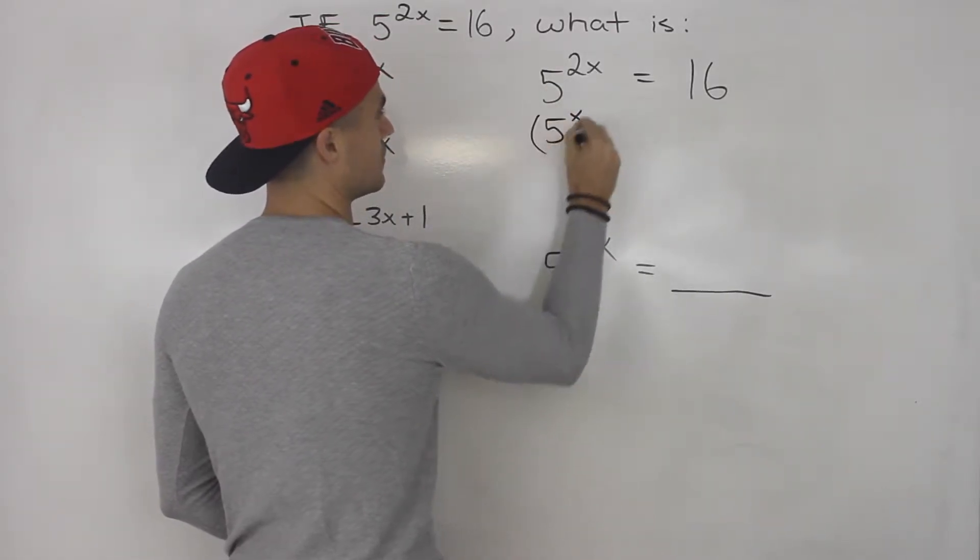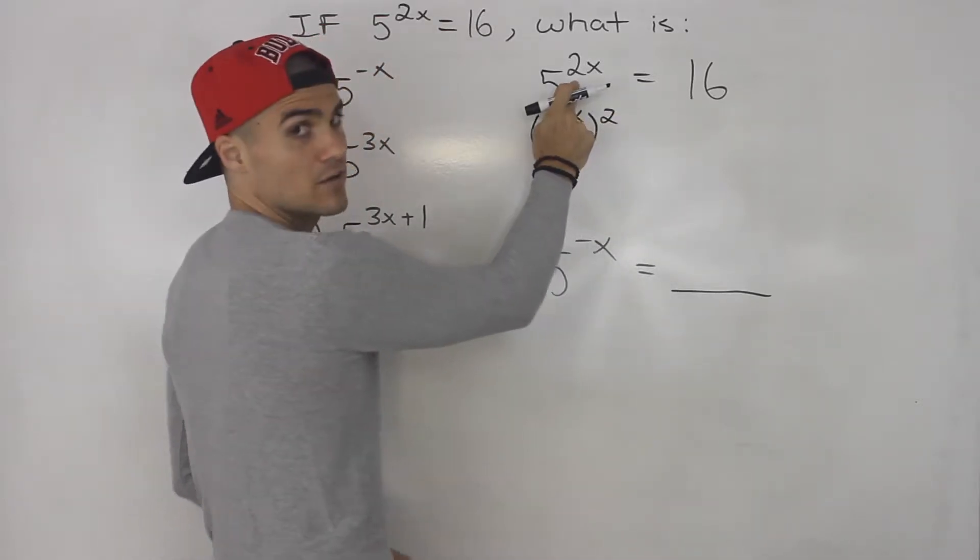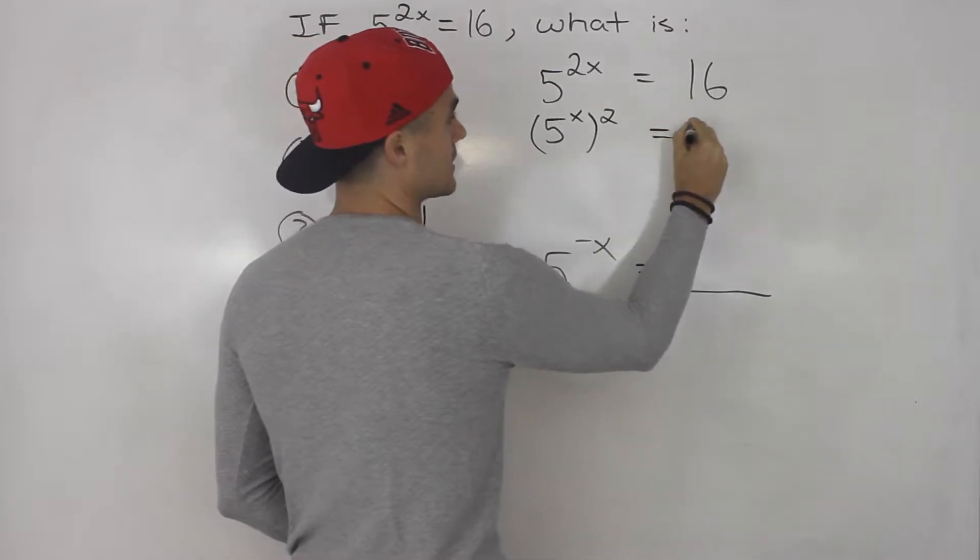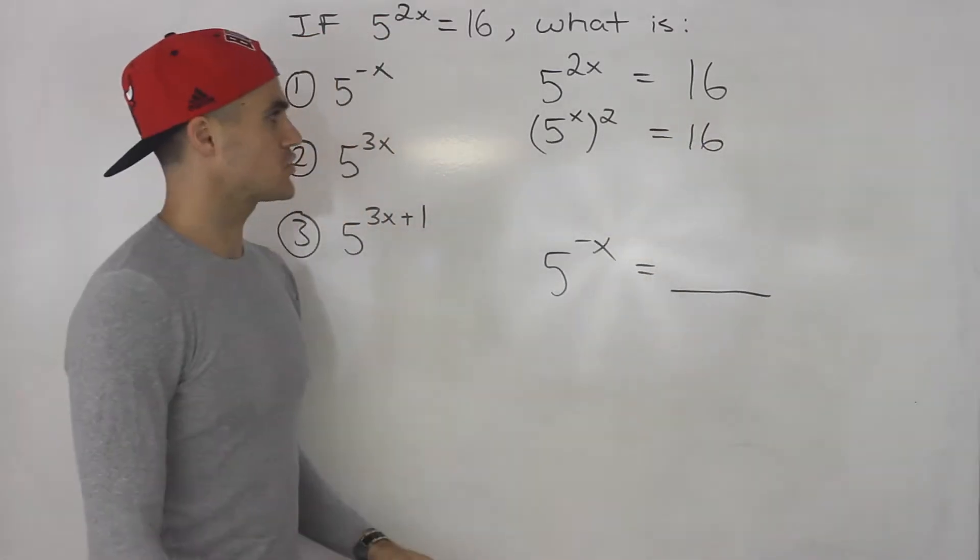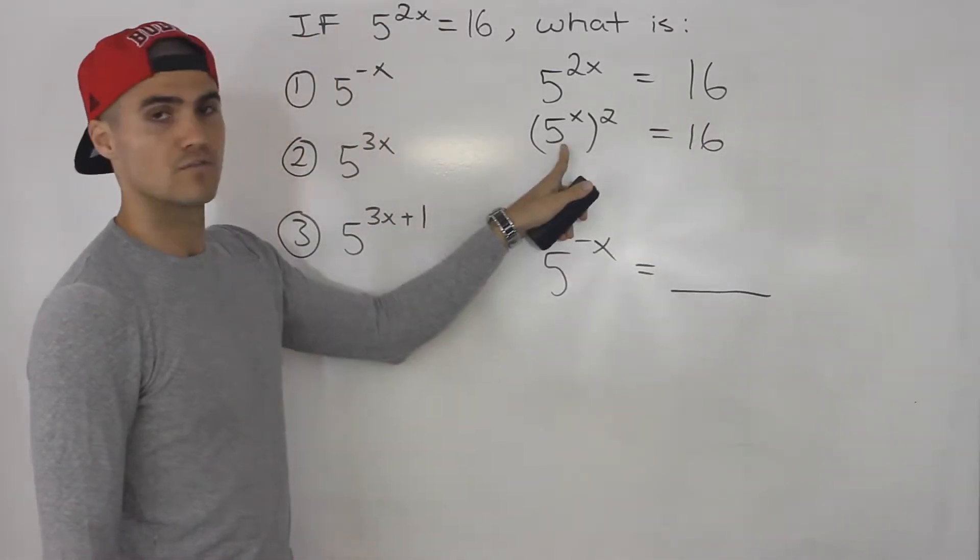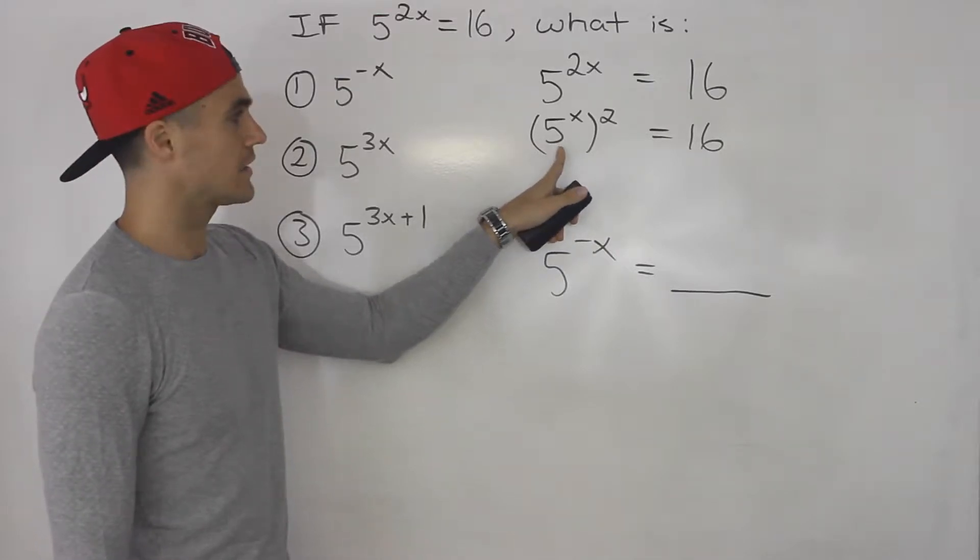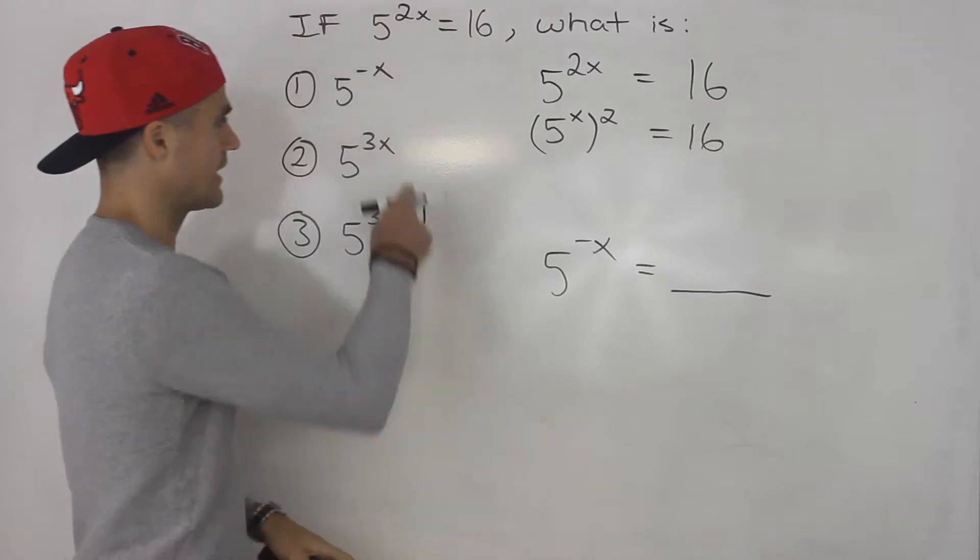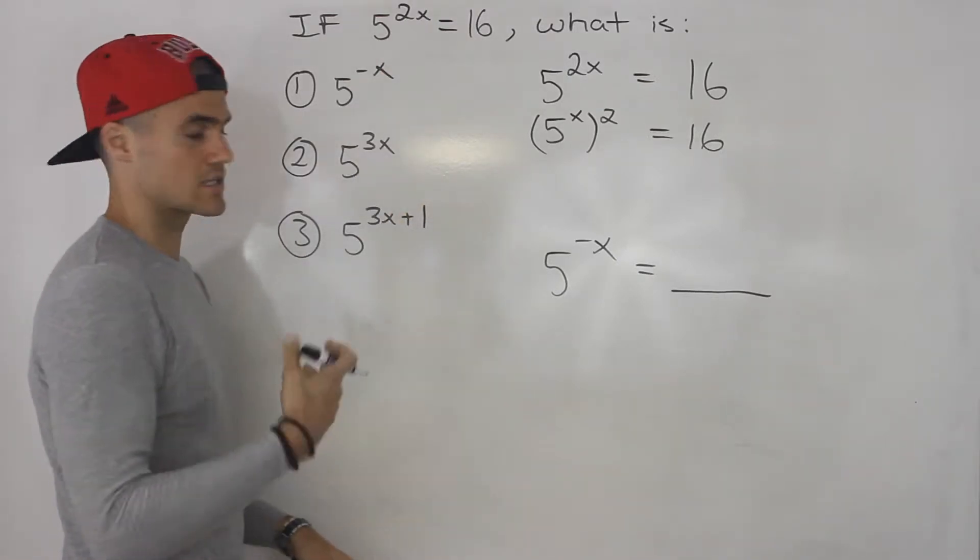So we take the 5 to the power of 2x, split it up into 5 to the power of x squared, and that's going to equal 16. So what I'm trying to do here is isolate for this 5 to the power of x, because if I could get an expression for 5 to the power of x, then getting to these expressions is a lot easier.